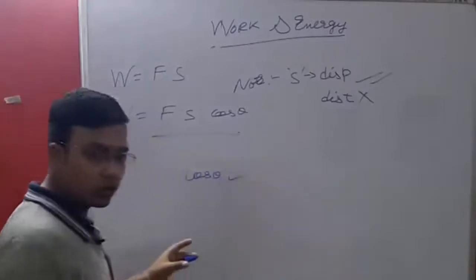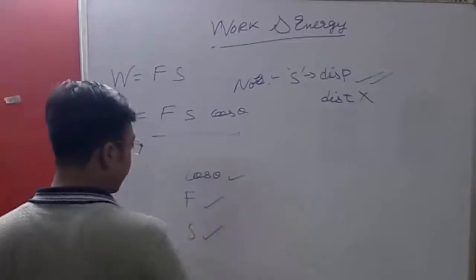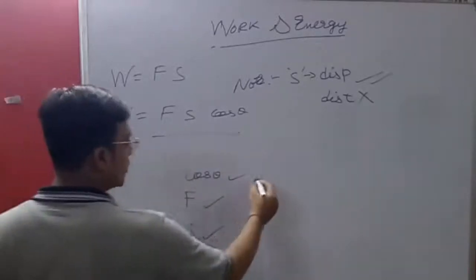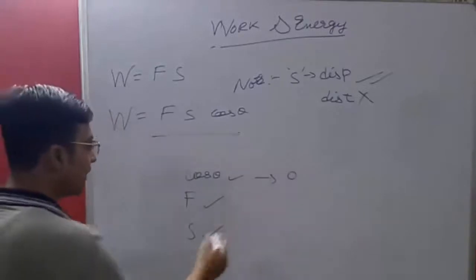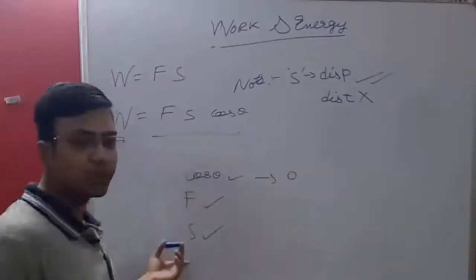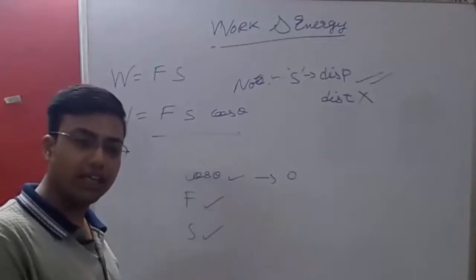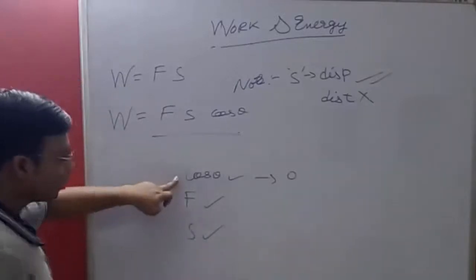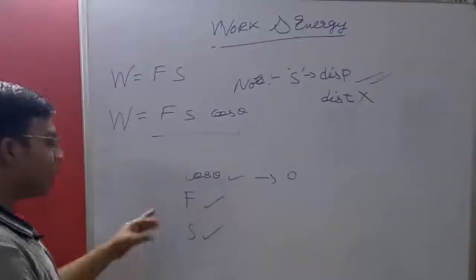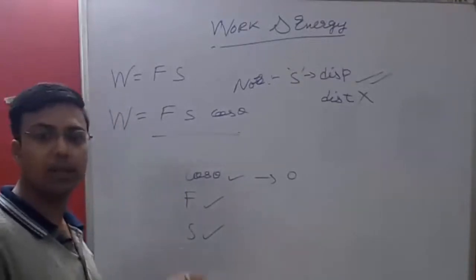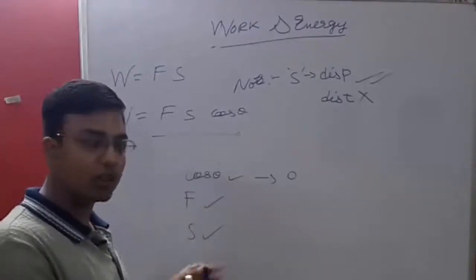Work done requires three conditions: there must be a value of force, there must be a displacement, and there must be a value of cosθ. If any of these three things are absent — if there is no force, or no displacement, or cosθ is zero — then work done will not be done. So work done is necessary for these three conditions to be satisfied.